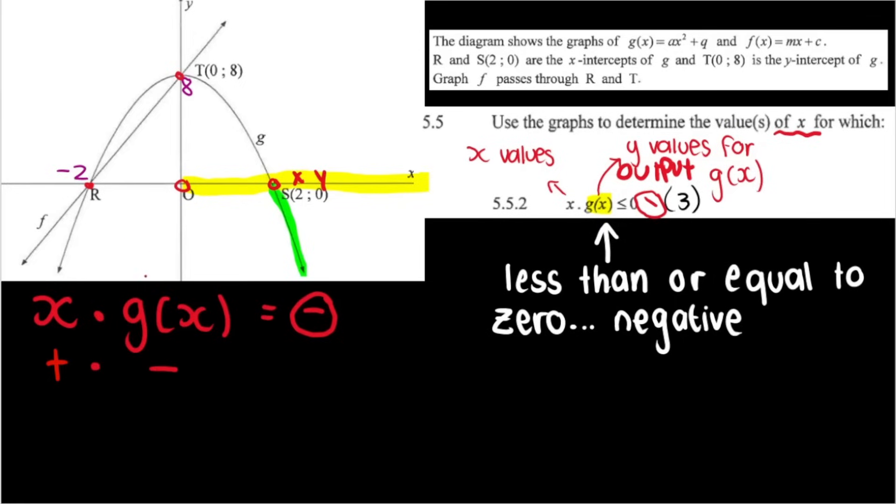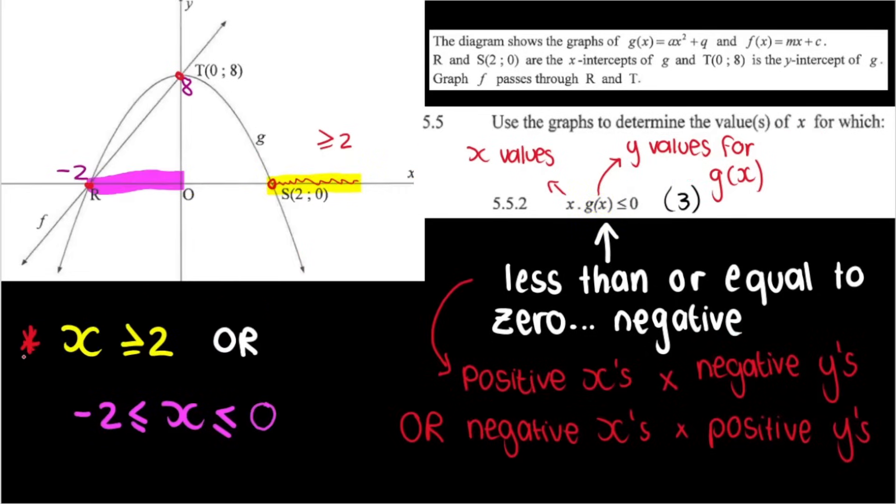So basically, we have highlighted it green. We're looking for where the product of x and g of x is negative. So it's where the x is positive, which I've highlighted in yellow, and where g of x is negative, which I've circled in green. So basically everything from this point onwards, that will suit my question. x must be greater than or equal to two. There's my complete and final answer for 5.5.2. Both of these need to be there in order for you to get your full marks.